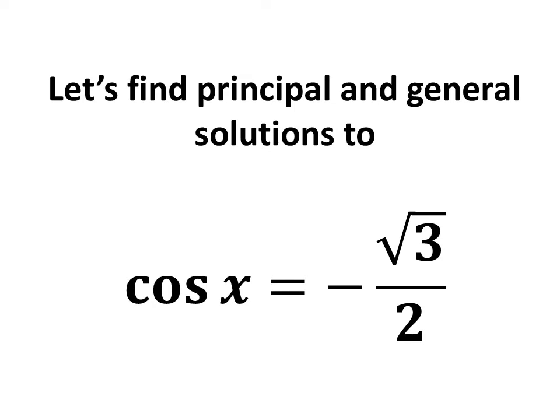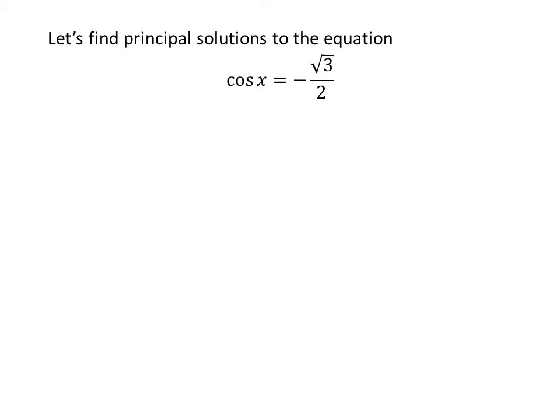In this video, we will learn to find the principal and general solutions to the equation cosine of x is equal to minus square root of 3 upon 2. Let us first find the principal solutions. We know the solutions to the trigonometric equation for which x is greater than or equal to 0 and less than 2 times pi are the principal solutions.